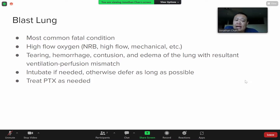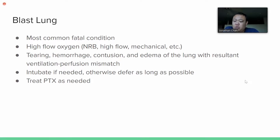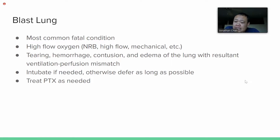If you think someone has blast lung, you want to give them oxygen — via non-rebreather, bag mask, or mechanical ventilation. You may need to intubate them to help them breathe. The lung can tear, bleed, or swell from the blast. Hold off on intubation as much as possible due to the fluid and swelling around the lung. If there's a pneumothorax, treat it with a chest tube to help decompress it.